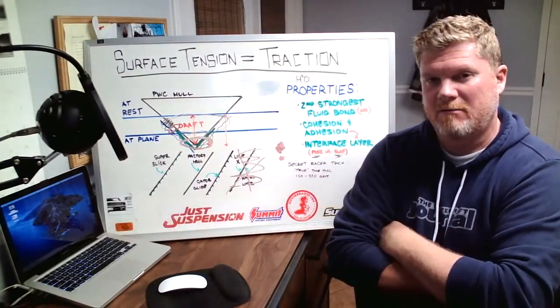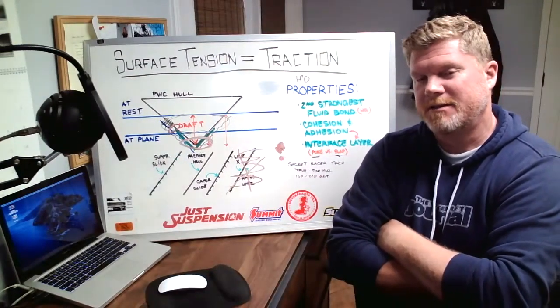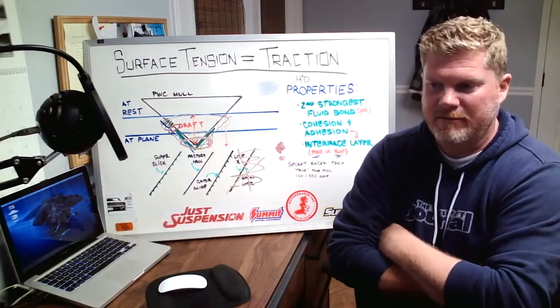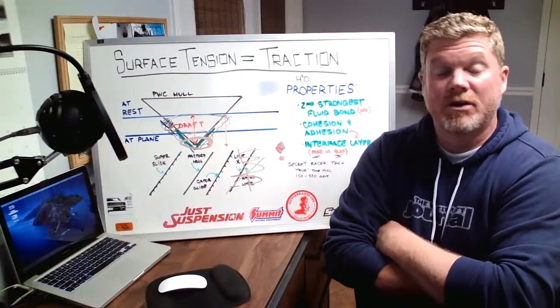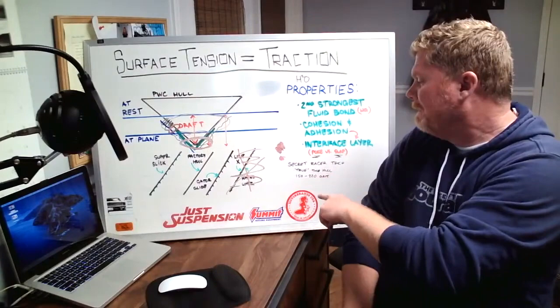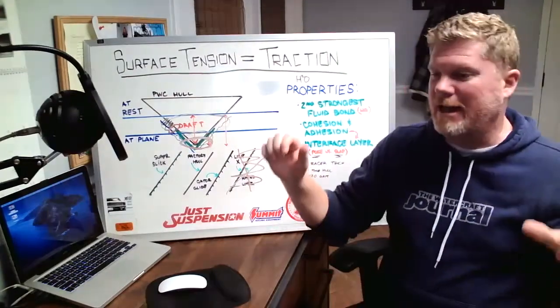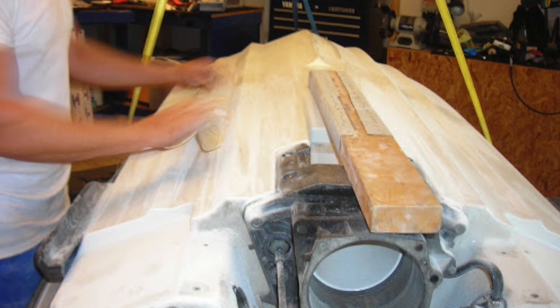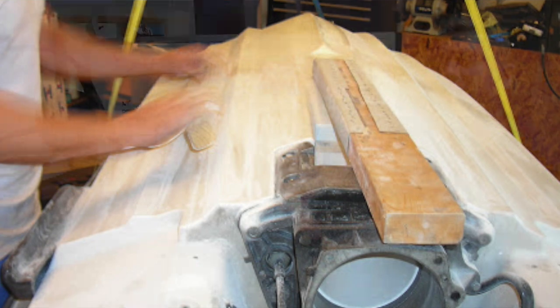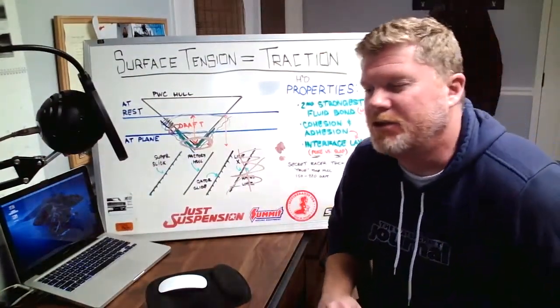Now I talked about racers and racers scuffing the hull and people go, well, that doesn't make any sense. That goes against everything Kevin said. Here's an old trick. And I actually brought it up here. I actually put it right here. I said, secret racer trick. Number one, they would take like a two foot or a three foot piece of wood, wrap it in sandpaper. And they sit there with 220 grit and they true the hull. Well, what does it mean to true the hull?